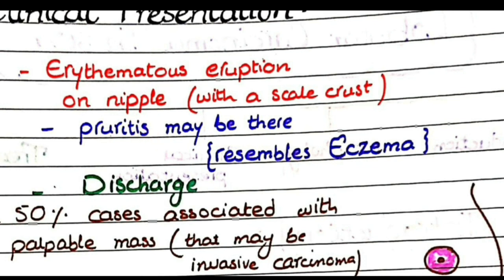These red colored lesions on the nipple may cause itching, and in this way Paget's disease of nipple resembles eczema of the skin. To differentiate: eczema is usually bilateral, involving the skin of both nipples and both breasts, but Paget's disease of nipple is usually unilateral. However, the main differentiation is done on diagnostic tests — biopsy or cytology.